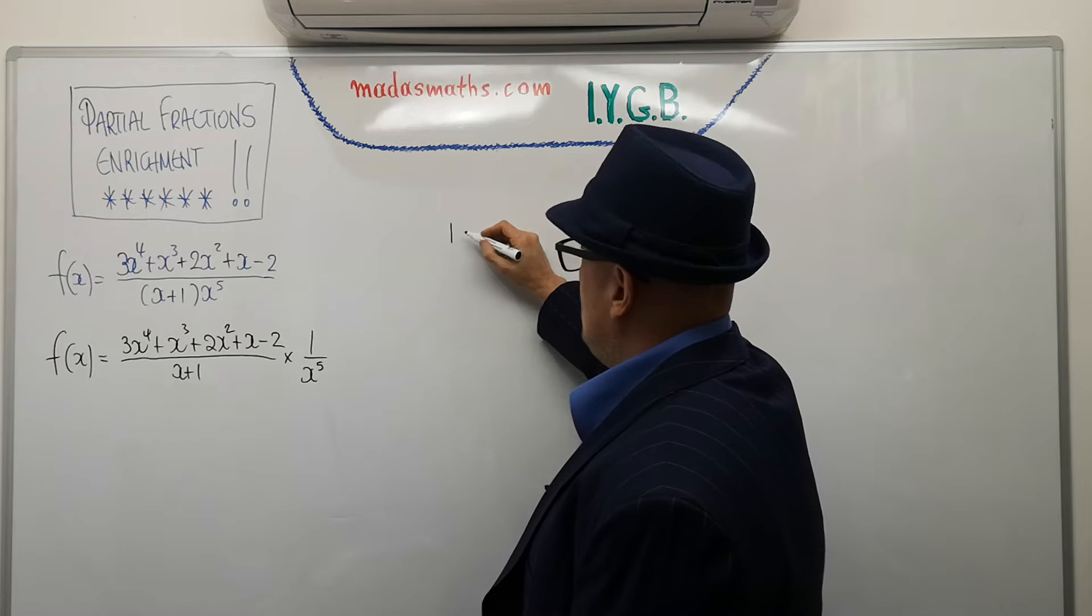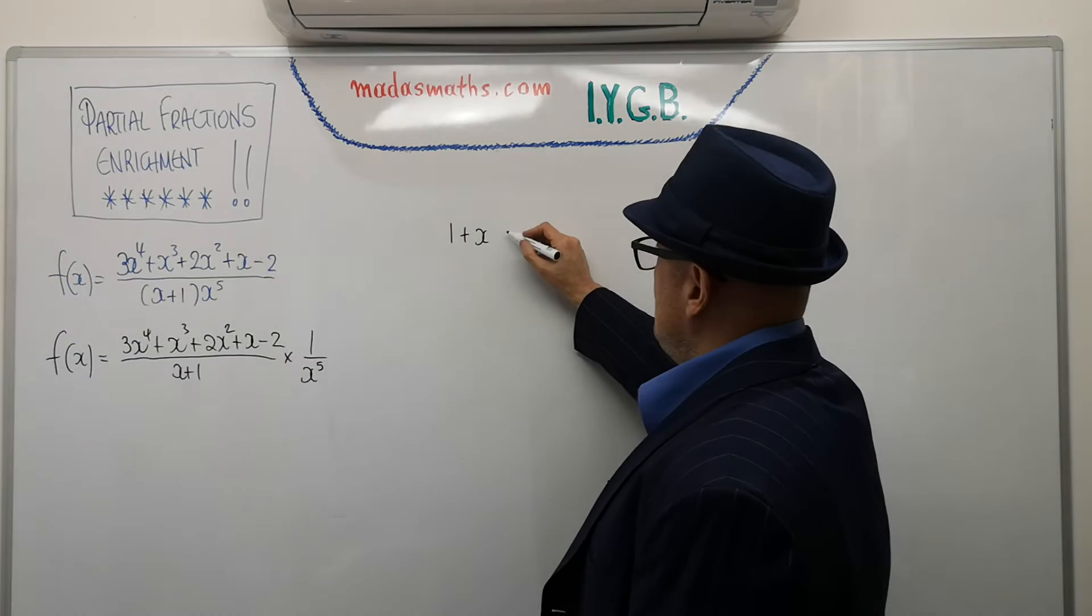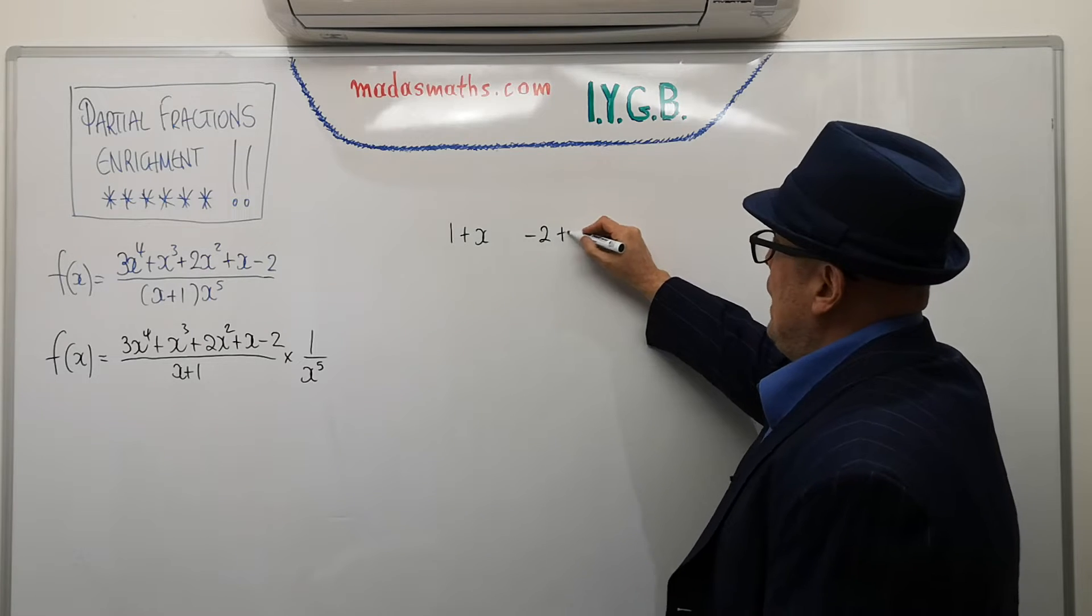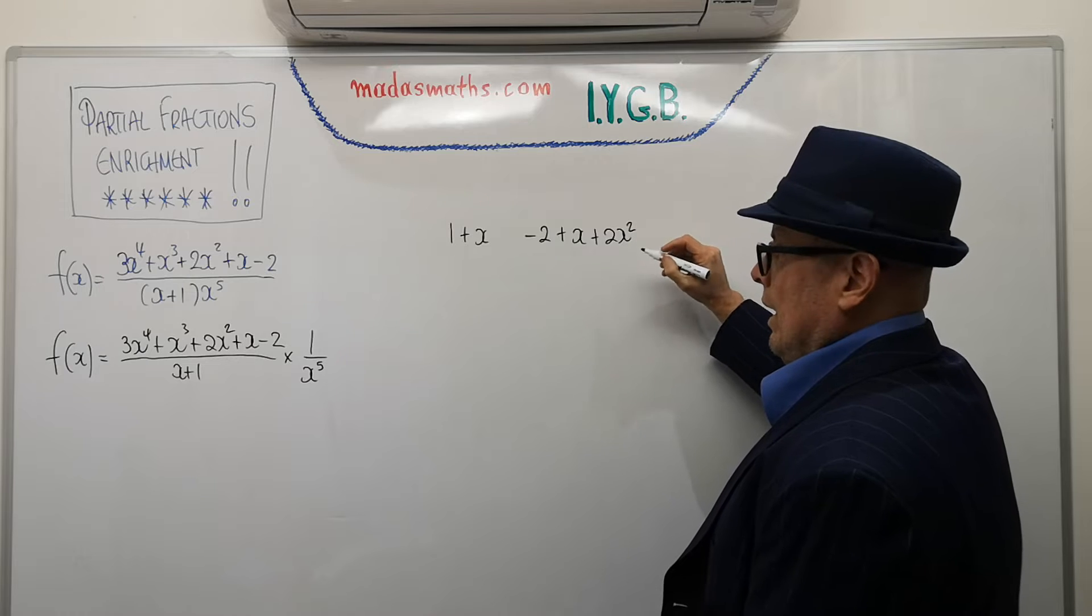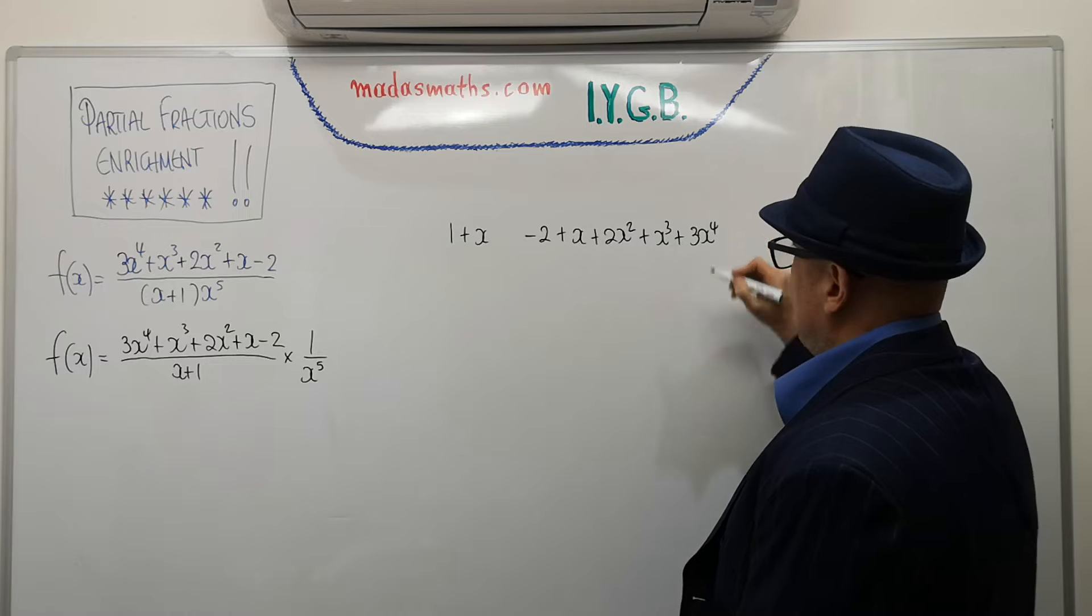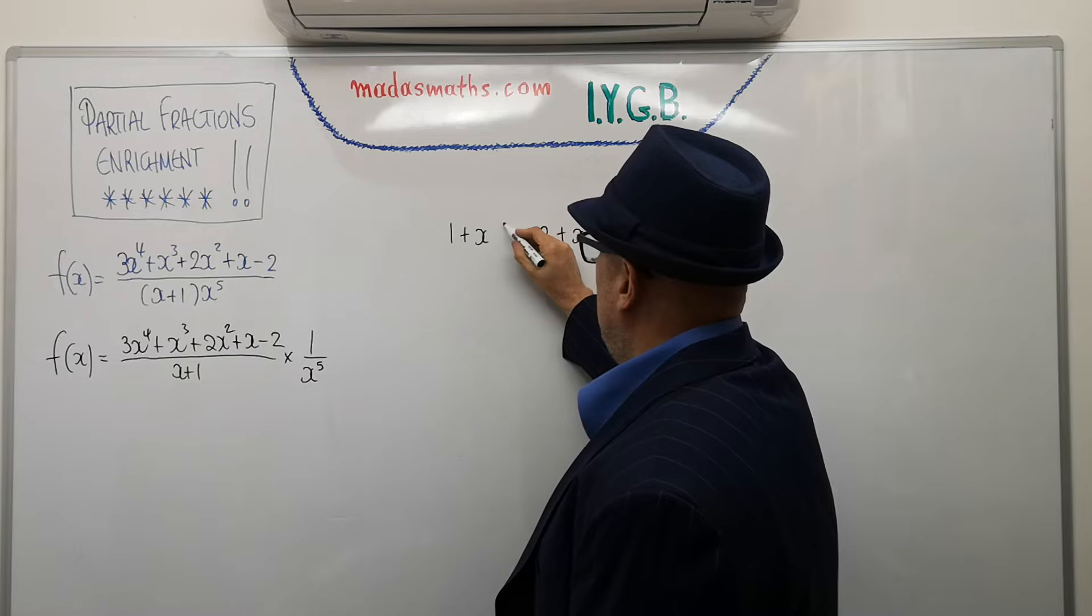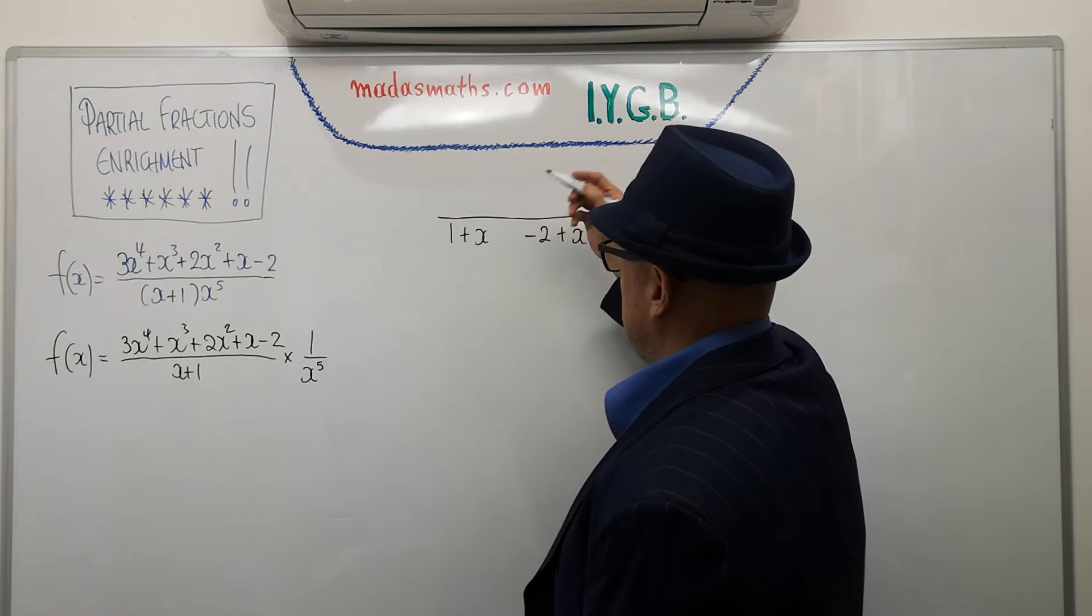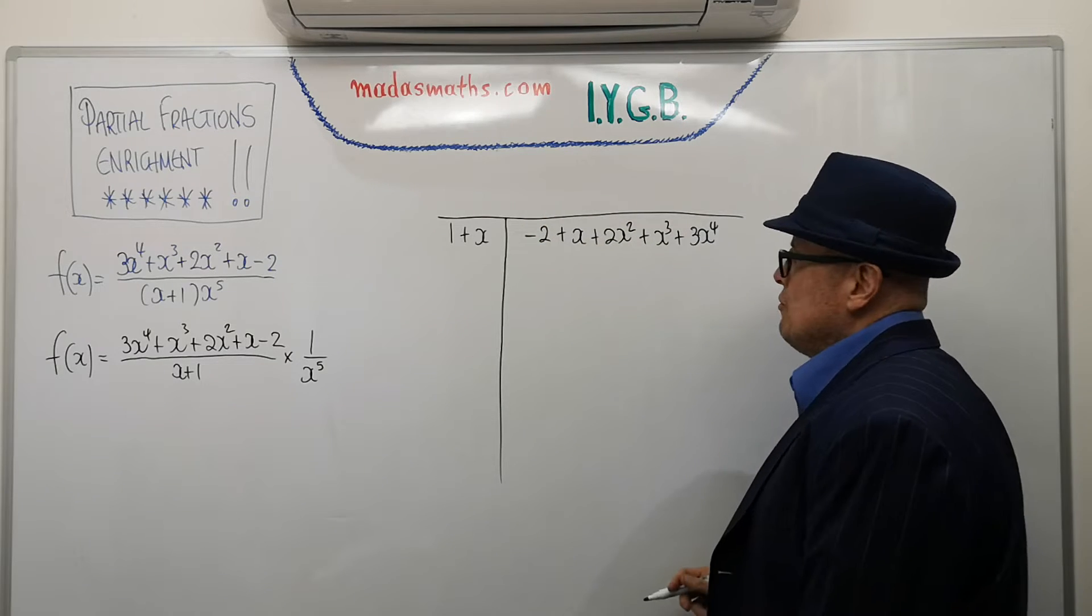Well, this is what it means. I'm going to write the x plus 1 as 1 plus x, so in ascending order of powers of x. And I'm going to do exactly the same thing with the numerator. So minus 2 plus x plus 2x squared plus x cubed plus 3x to the power of 4. And I wish I didn't have to show you long division because I do my long division not in a standard way. And writing it backwards as well is going to be even worse. So this is now my long division. Try to follow it.